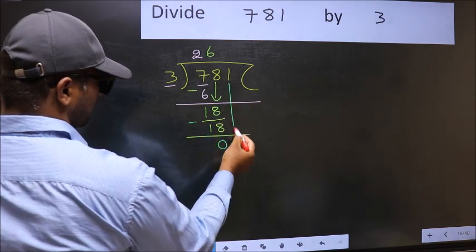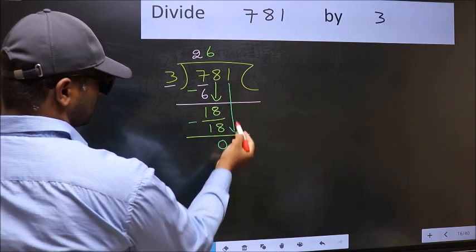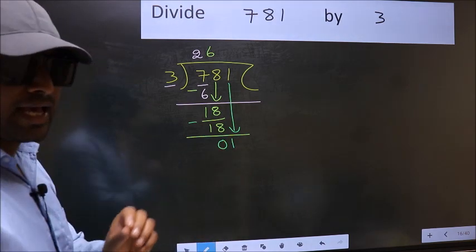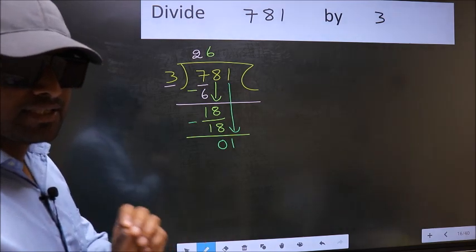After this, bring down the beside number. So 1 down. After this step, the mistake happens. And the mistake is this.